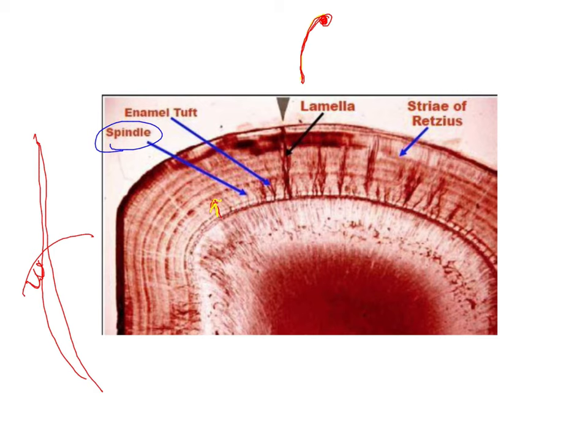Enamel tufts are what you see here. A tuft is basically, it appears like a tuft of grass. They are attached to the dentinoenamel junction and are seen within the enamel. These enamel tufts are present within the inner one third of the enamel. They do not extend more than the inner one third.